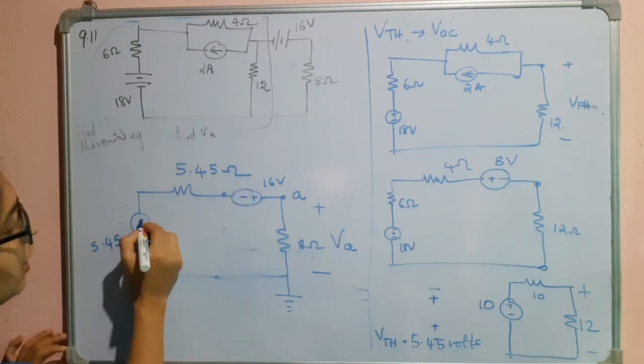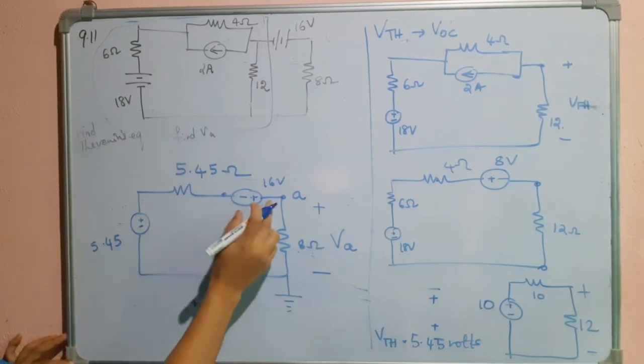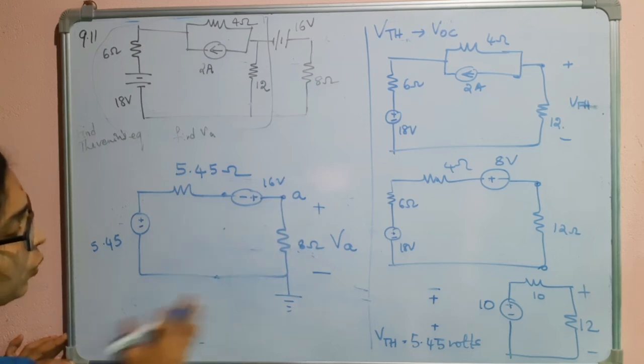See, plus minus then plus. So, that means plus minus plus minus. So, we can add these two. So, 21.45.